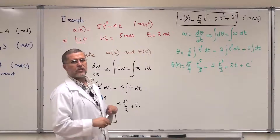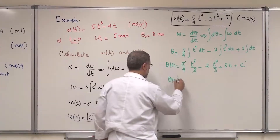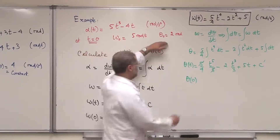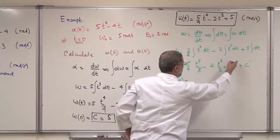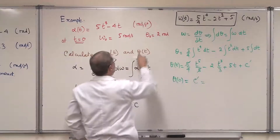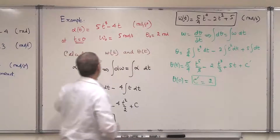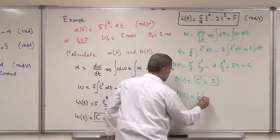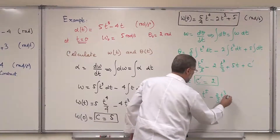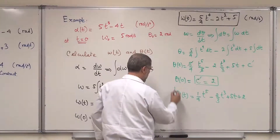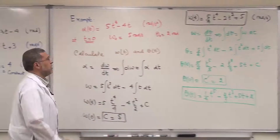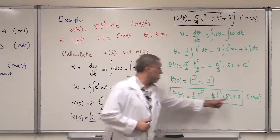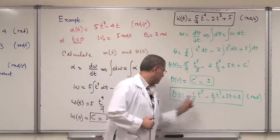To find C', apply the initial condition θ(0) = 2: putting t = 0 gives 0 − 0 + 0 + C' = 2, so C' = 2. Therefore θ(t) = (1/4)t⁵ − (2/3)t³ + 5t + 2, in radians. At t = 0 you get θ = 2, and at t = 1 or t = 2 you get different angular positions.